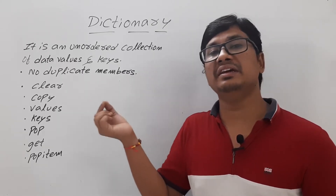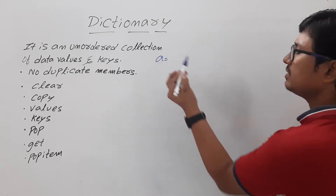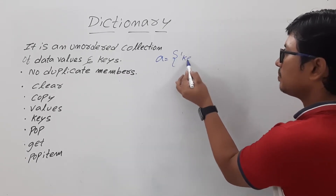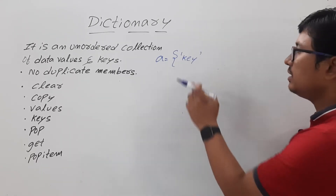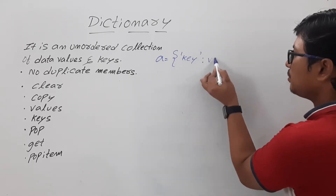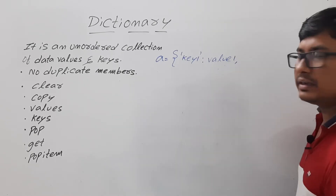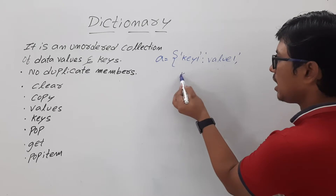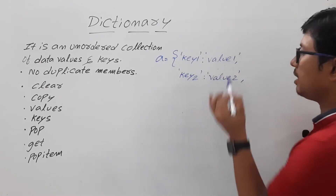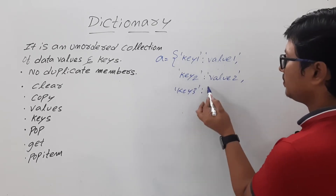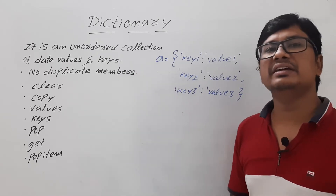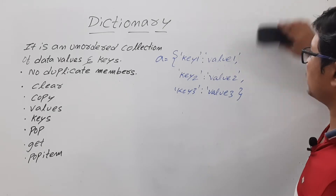Now let me discuss how to create a dictionary. I need to write curly braces and give the key. If the key is an integer you can write the integer value; if it is a string you write it within quotation marks. You will have key 1 colon value 1, then key 2 colon value 2, then key 3 colon value 3, closed with curly braces. The value can be of any data type. This is the generalized syntax for creating a dictionary.